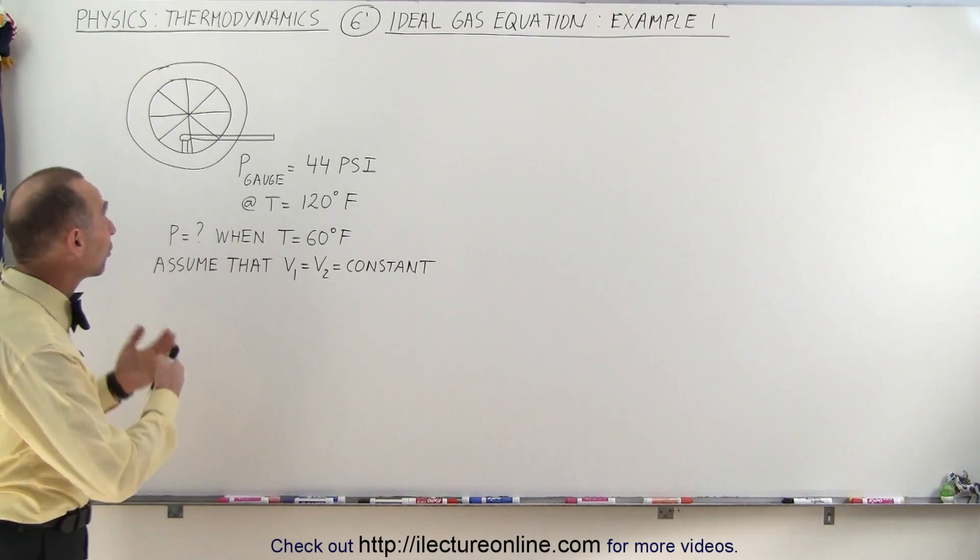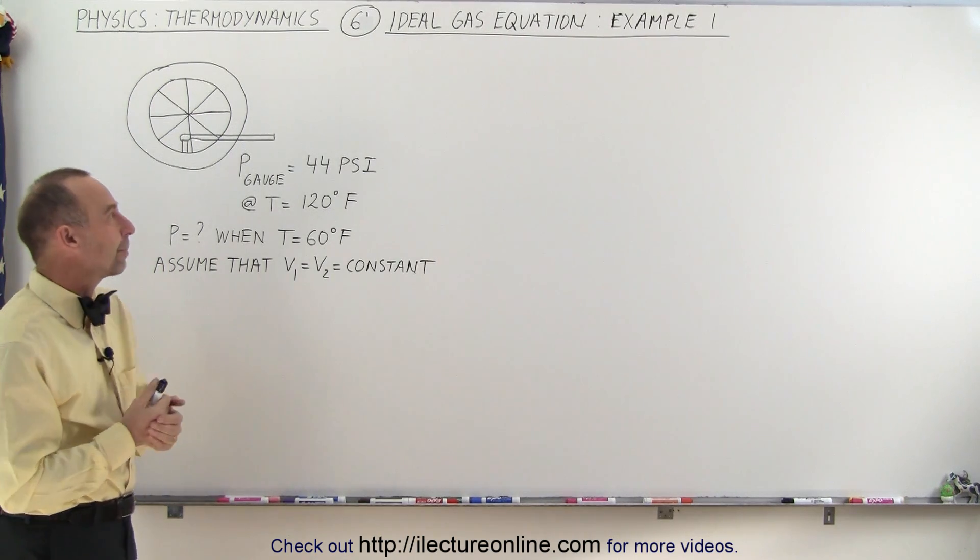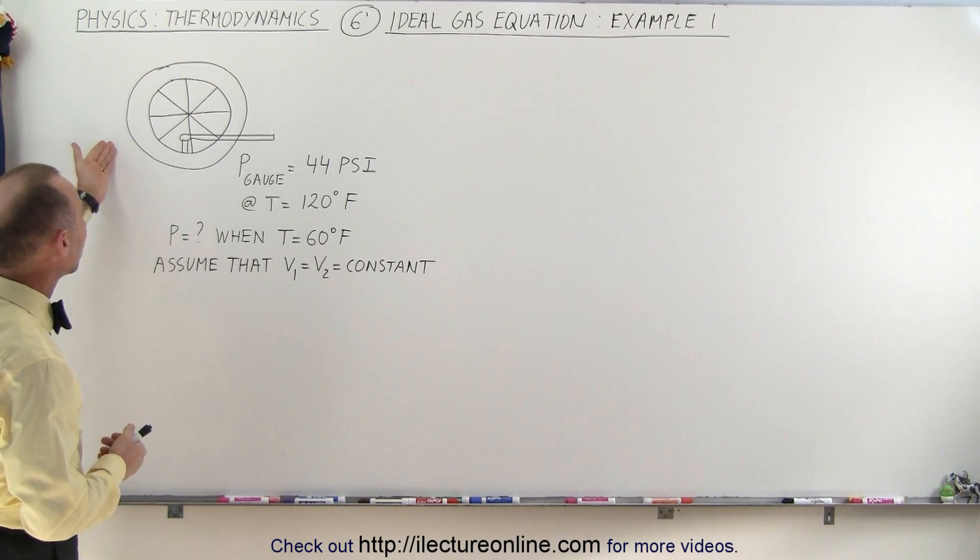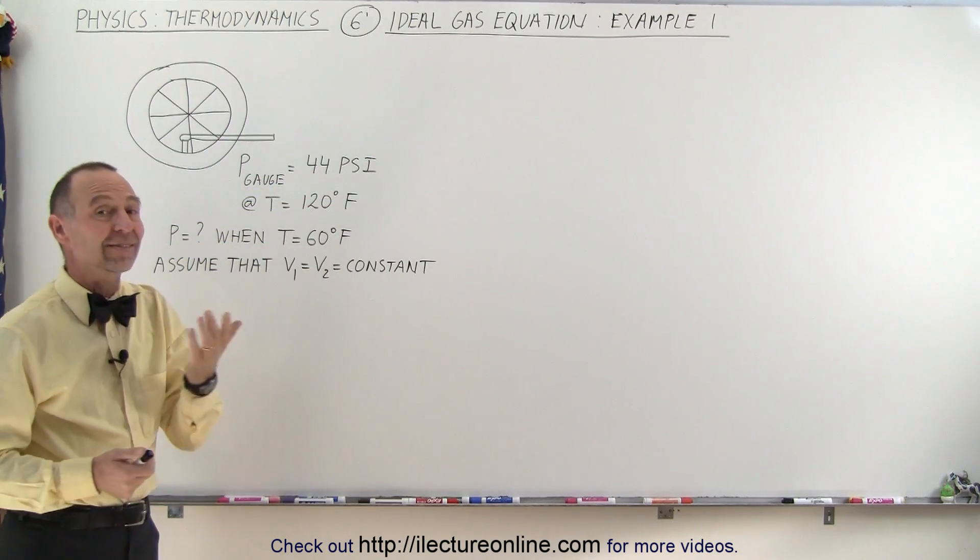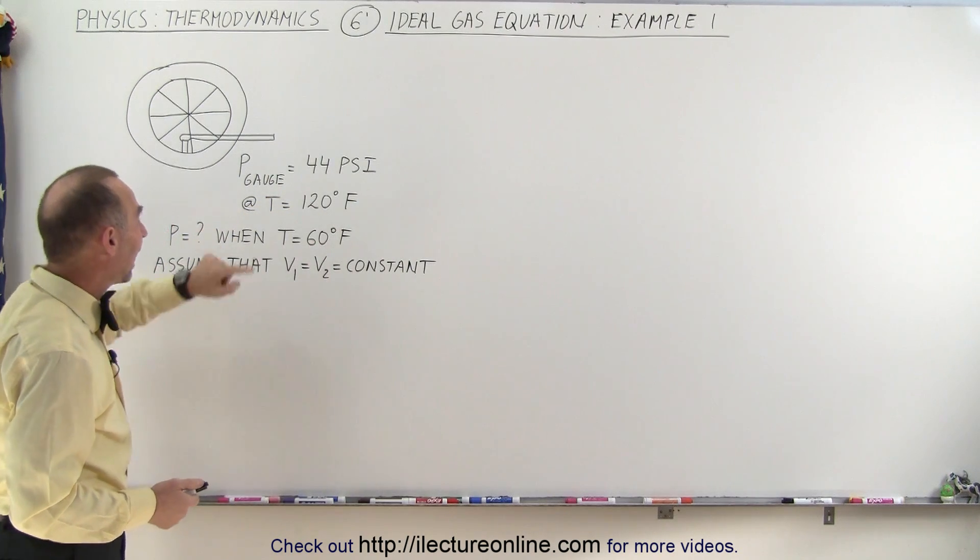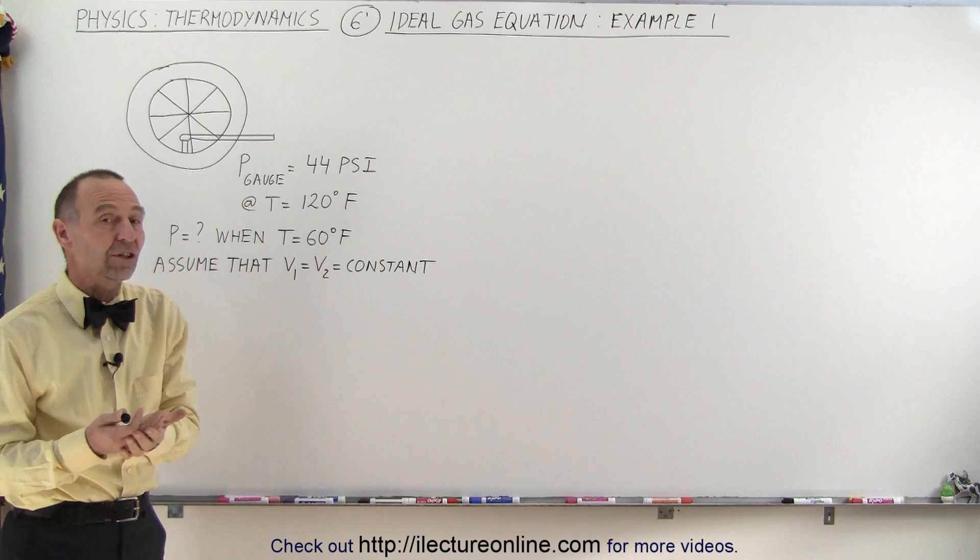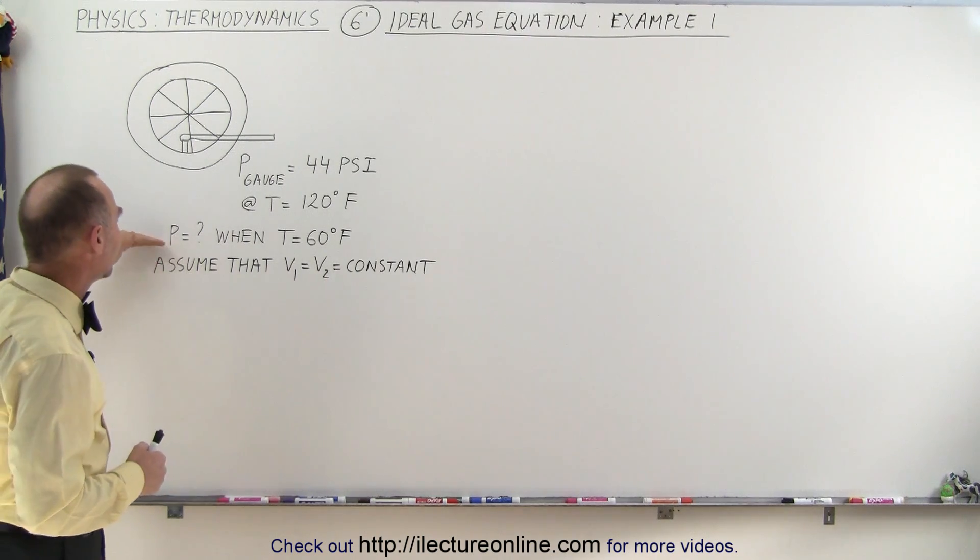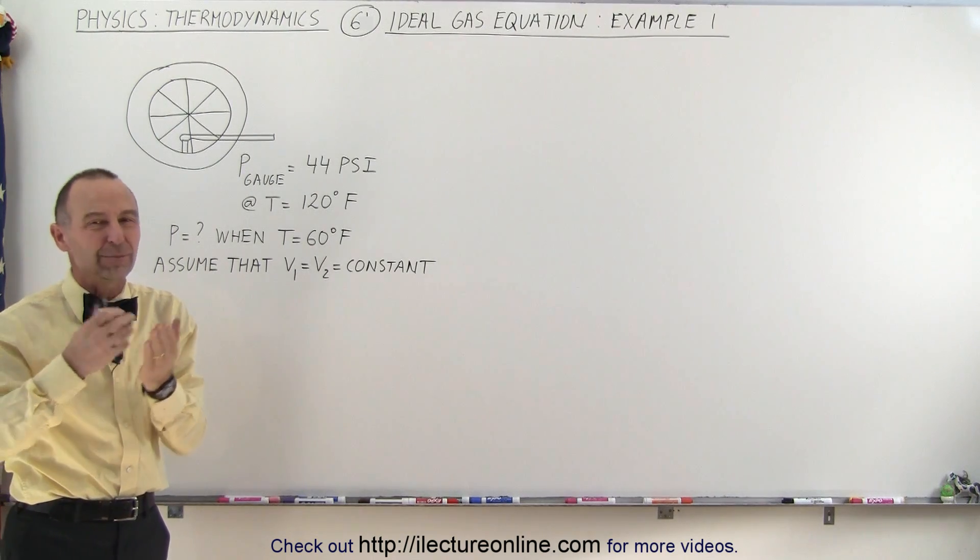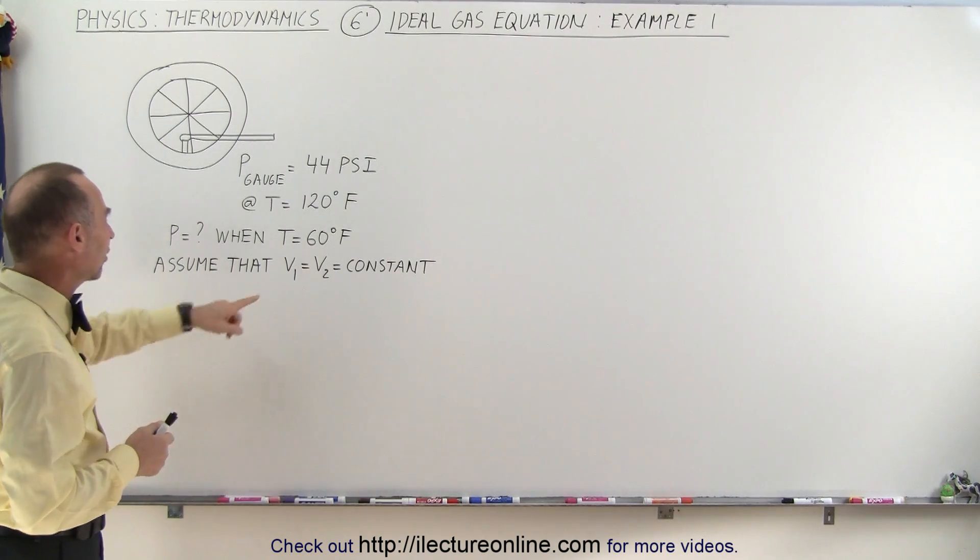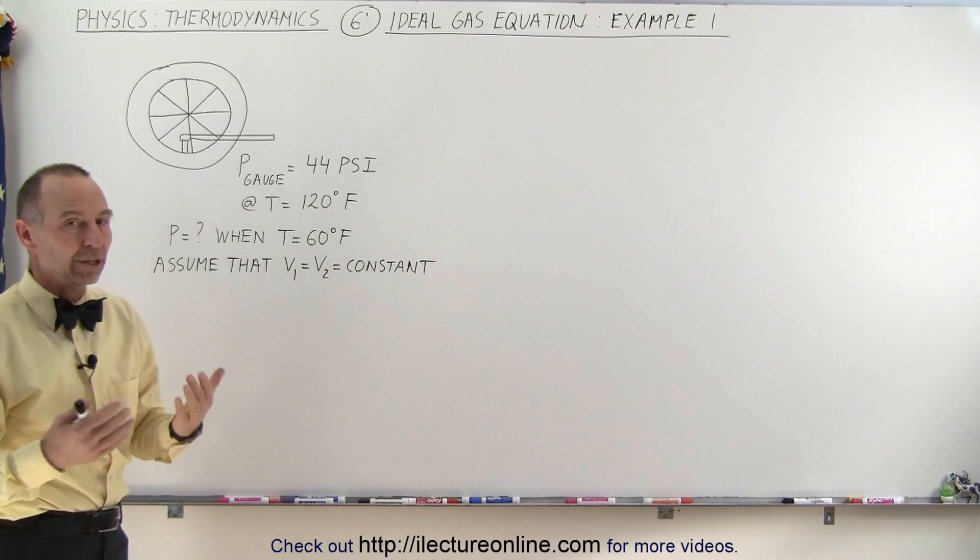It's a video about thermodynamics and in specific the ideal gas equation. We're going to do this example where we have a tire which has been pressurized to 44 psi at a temperature of 120 degrees Fahrenheit. The question is, what would be the pressure if the temperature drops to 60 degrees Fahrenheit? We're going to assume that the volume before is equal to the volume after. Therefore, the volume is constant.